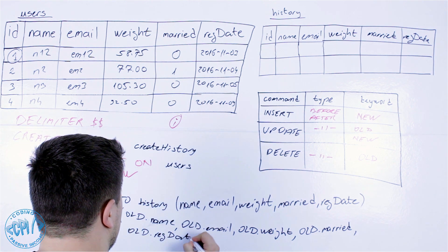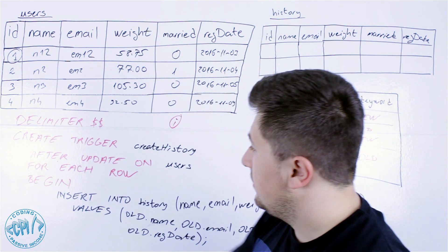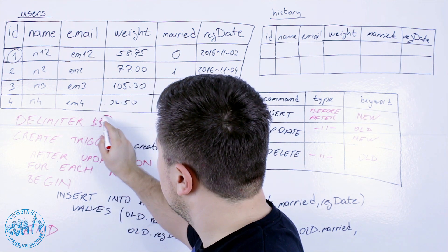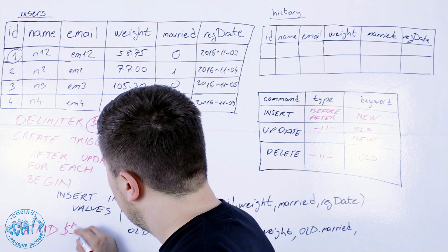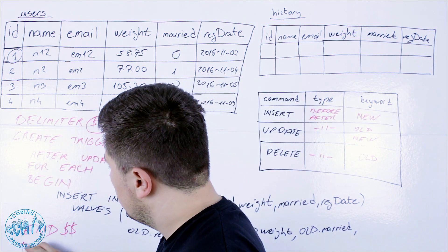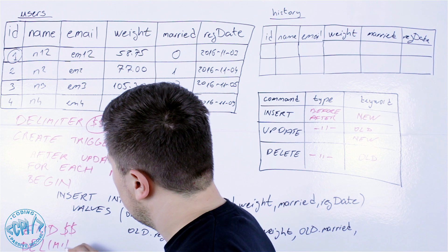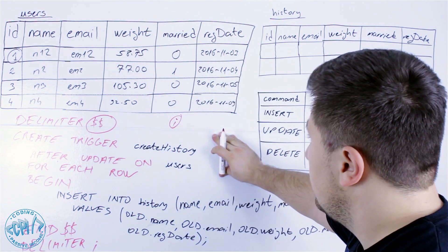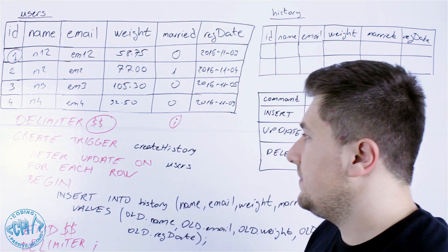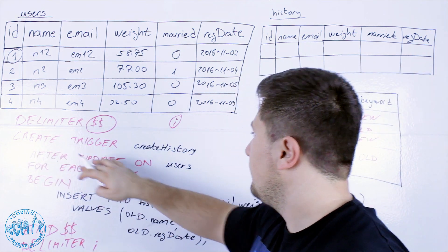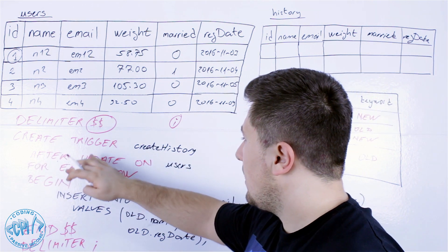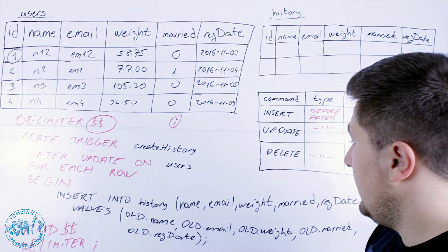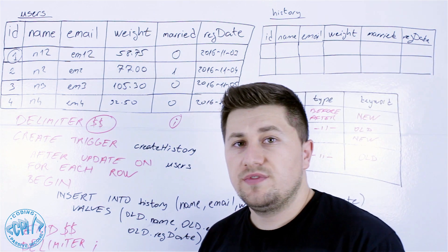We continue with old.email, old.extraction_date, and then close with end and reset the delimiter back to the default. Analyzing this code: first I changed the delimiter, then set create trigger with the name 'create_history', after update on users, for each row, begin, the insert command, and end with the delimiter.